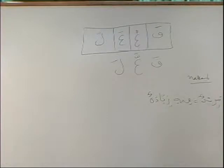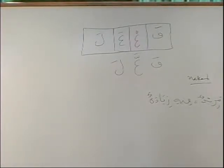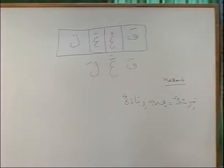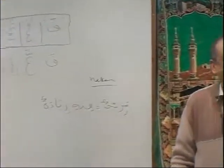Now we have a rule: if the verb is four letters, then alamatu mudariya gets a damma — no more fatha. When it is five letters, it will become fatha again. But any time there are four letters, the alamatu mudariya will have a damma. Inshallah. Fine.